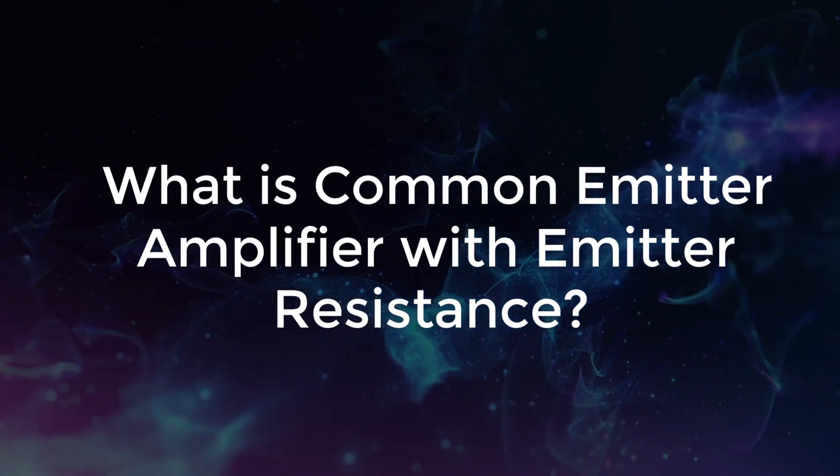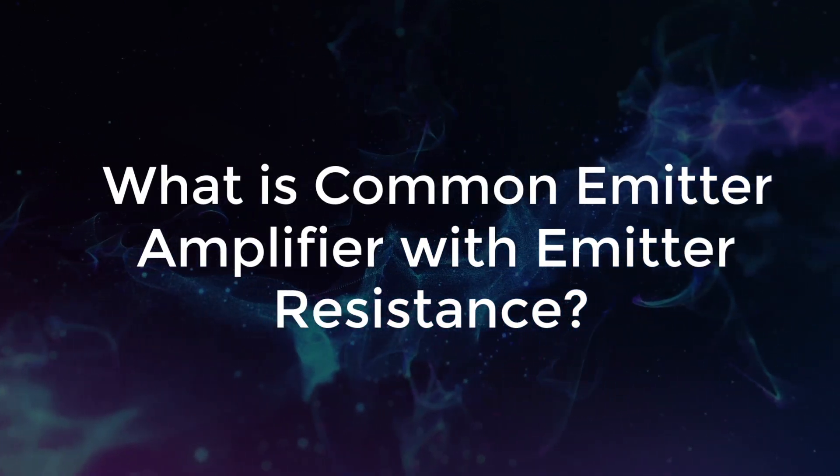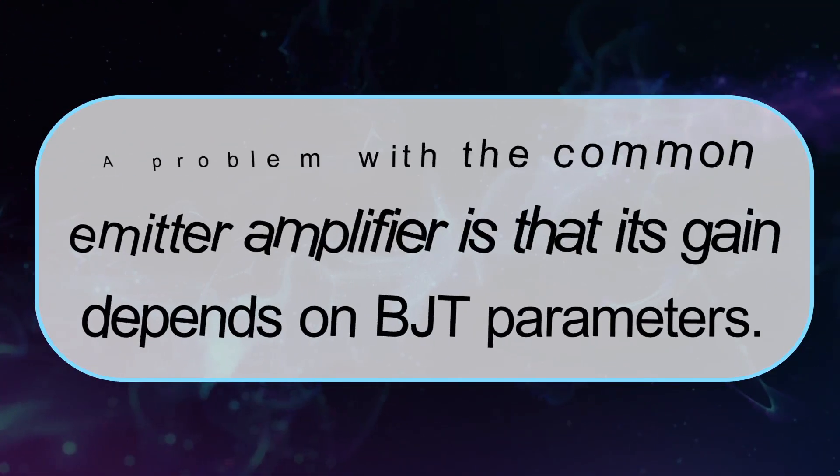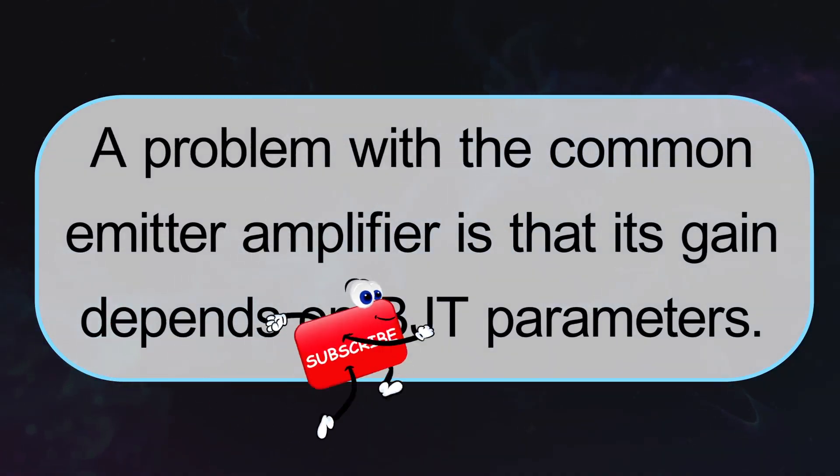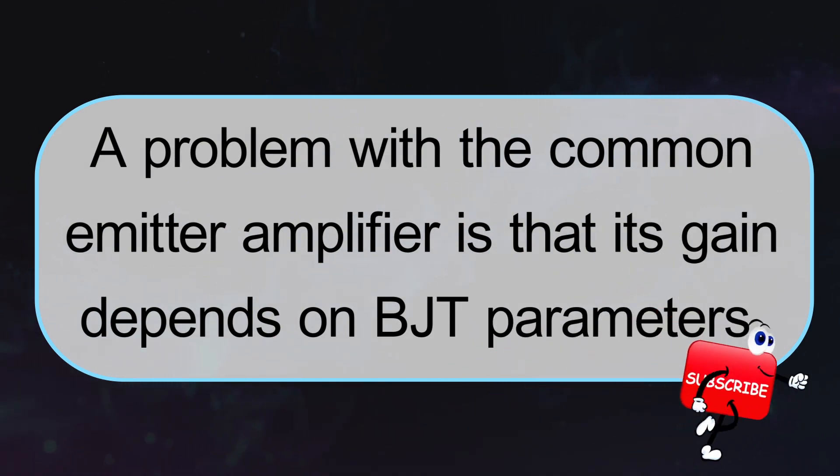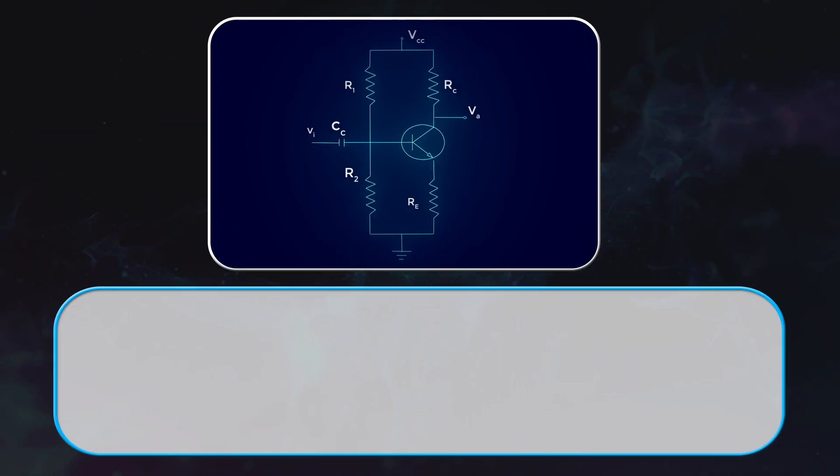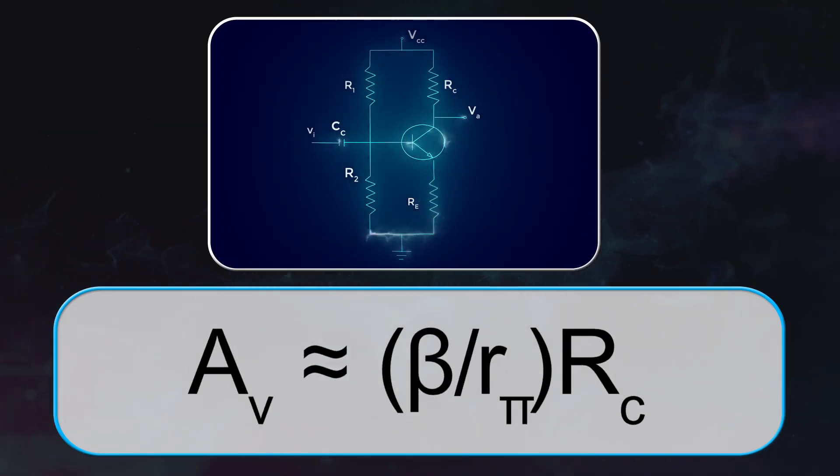What is Common Emitter Amplifier with Emitter Resistance? A problem with Common Emitter Amplifier is that its gain depends on BJT parameters. That is, AV approximately equals to Beta by R Pi into RC.